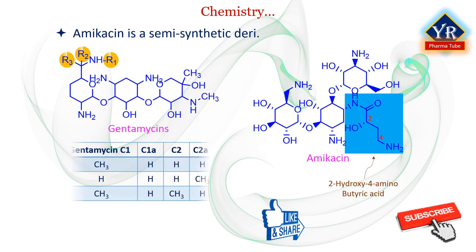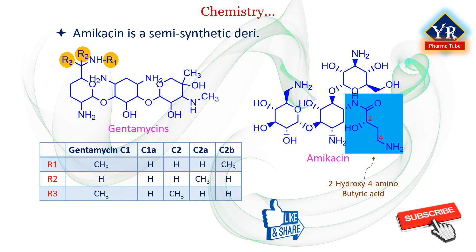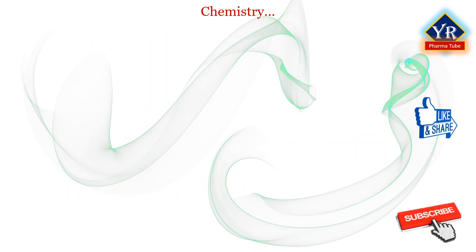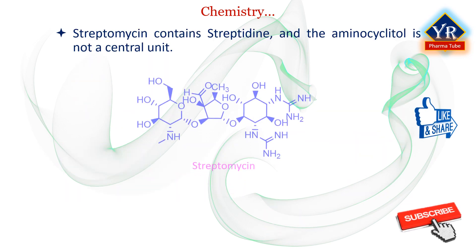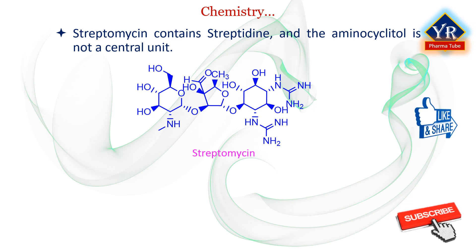The gentamicin family — which includes gentamicins C1, C1A, and C2, sisomycin, and netilmycin — contains a different three-amino sugar known as garosamine. Variations in methylation of the other amino sugar result in the different components of gentamicins. These modifications appear to have little effect on biological activity. Streptomycin differs from other aminoglycoside antibiotics in that it contains streptidine rather than 2-deoxystreptamine, and the aminocyclitol is not in a central position, as shown in the structure.